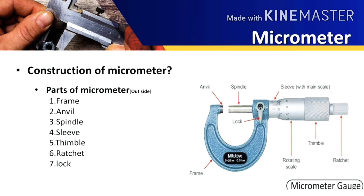After that there is a thimble which has a circular scale on it and it is used to move the spindle. After that there is a ratchet to adjust the fine displacement of the spindle. Now the last one, the lock, which is used to lock the movement of the spindle when we have the final reading.